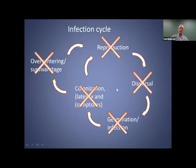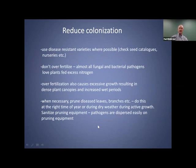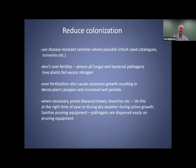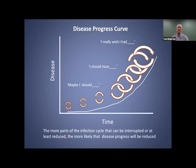For the colonization phase: use disease-resistant varieties where possible. Do not over-fertilize — many fungal and bacterial pathogens thrive on plants fed with excess nitrogen, and over-fertilization can also cause excessive growth, dense plant canopies, and increased wet periods. Finally, if pruning plants, do this at the right time of year and especially during dry weather. Sanitize your pruning equipment, because many pathogens are dispersed easily on that equipment.